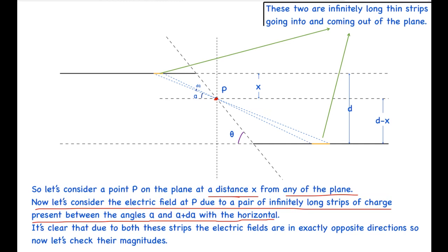These two strips will be infinitely long, coming out of and going into the plane. They can be considered as two very thin strips as the angle d-alpha is very small. The electric field due to one strip will be in one direction and that due to the other strip will be in exactly the opposite direction. Now let's look at the magnitudes of the electric field due to these two strips.